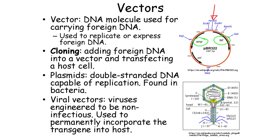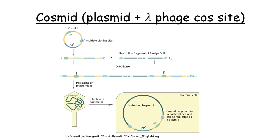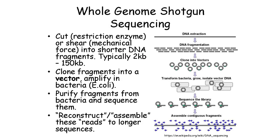Viral vectors are engineered from existing viruses; some of their genes are removed to make them non-infectious and ensure they do not have any environmental or health risks. One popular vector is a cosmid vector, which is engineered by combining pieces from a plasmid and the lambda phage. The plasmid component provides the ability to replicate within the bacteria. The lambda phage is a bacterial virus that infects E. coli, and the cos site of the lambda phage is necessary for packaging the DNA into phage capsids. After the fragments are cloned into vectors, they are amplified, then extracted and sequenced. The short sequence reads we get act like puzzle pieces, and we make use of the overlaps among these puzzle pieces to assemble the genome sequence.